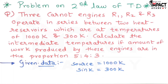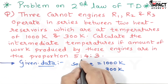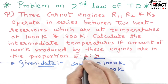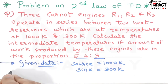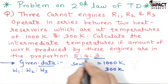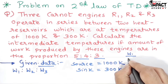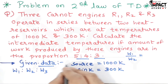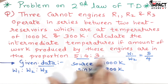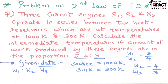I'll draw the diagram to explain. The ratio of work done by the three engines is given: W1 to W2 to W3 is 5 to 4 to 3. In other words, W1/W2 = 5/4 and W2/W3 = 4/3. We have to find the intermediate temperatures.